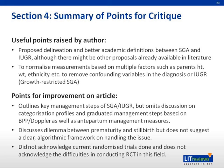Finally, I would like to provide a summary critique of this article. The author did point out several important points — he recognized the importance of differentiating between SGA and IUGR, proposed better academic definitions between the two, and attempted to normalize measurements based on multiple factors such as parental height, weight, and ethnicity to remove confounding variables. However, there are areas the author failed to discuss — he omitted categorization profiles and graduated management steps based on BPP and Doppler ultrasound, as well as antenatal management measures. He also did not suggest a clear framework for handling the dilemma between prematurity and stillbirth, and did not mention important randomized trials done so far and their inconclusive results.